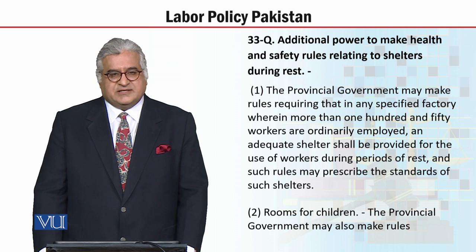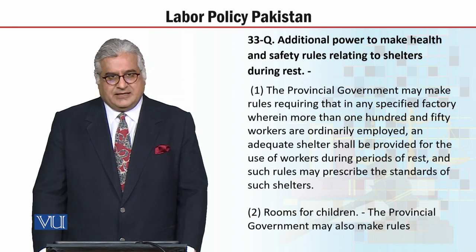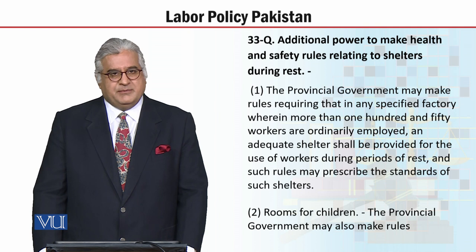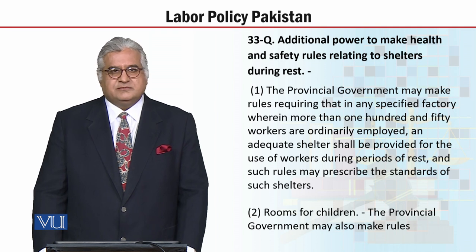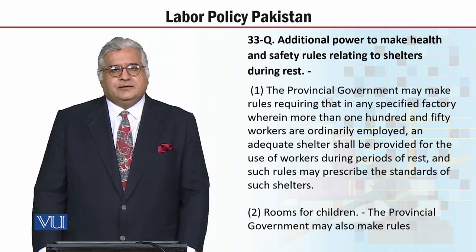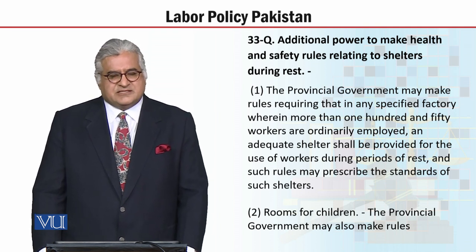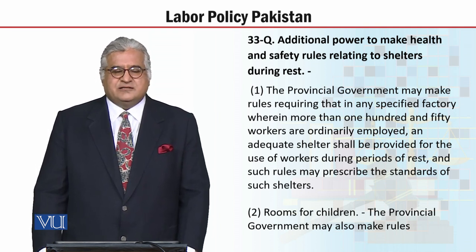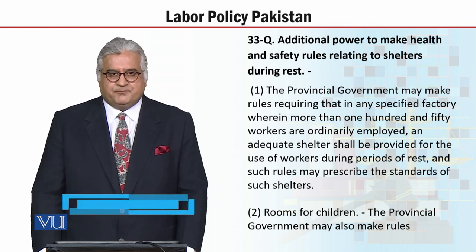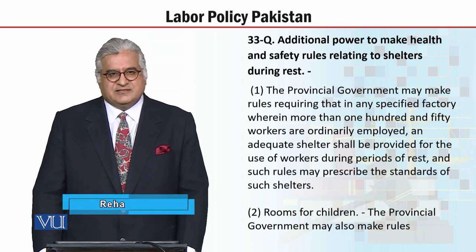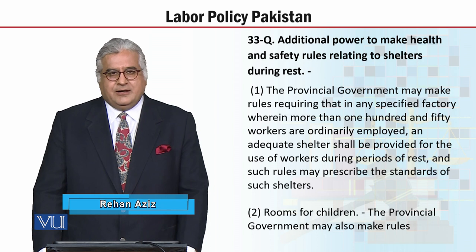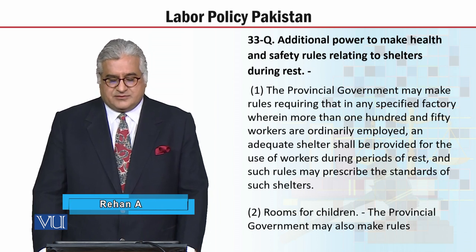Section 33Q, subsection 1. The provincial government may make rules. This is subordinate legislation by the provincial government. Primary legislation, which is Factories Act 1934, is a product of the legislature.